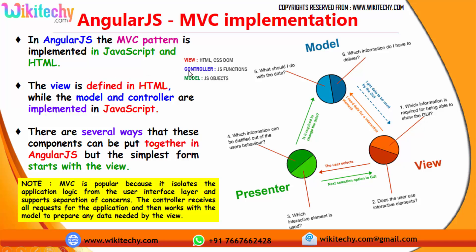In MVC, the Model is nothing but the objects. The View is nothing but the HTML or CSS files. And the Controller is nothing but JavaScript functions. The View is defined in HTML while the Model and Controller are implemented in JavaScript. There are several ways these components can be put together in AngularJS, but the simplest form starts with the View.